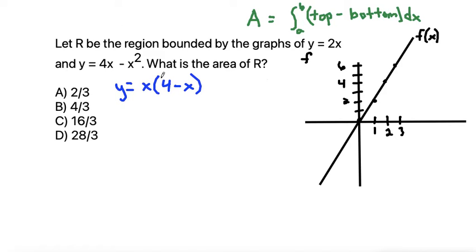So then these factors tell us where our graph touches the x-axis. So it would touch at 0, and then it would touch again at 4. Because if we take 4 - x = 0, and we move the x to the other side, we get 4 = x as our x-intercept.